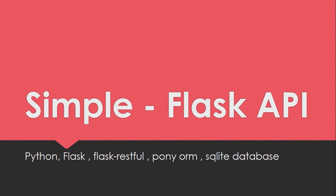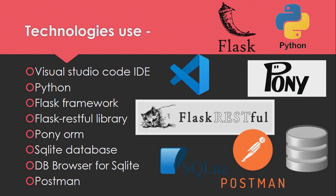Hello everyone, today we are going to talk about how to create a simple API with Python Flask. For our API creation project we are going to use technologies like Python Flask, Visual Studio Code, Flask-RESTful library, Pony ORM, SQLite database, and Postman as API server.